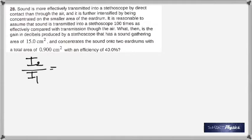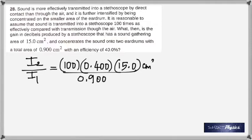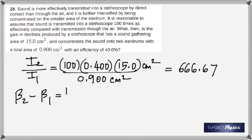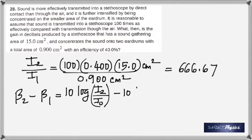Now setting this up as a ratio, I2 by I1 is 100 times 40%, which is 0.4, times 15 cm squared. Here you need not change into m squared because both are in cm squared. So it's a ratio, it doesn't matter. And you get this as 666.67. That's the ratio. And then you got to find the gain. Gain means how much bigger it is.